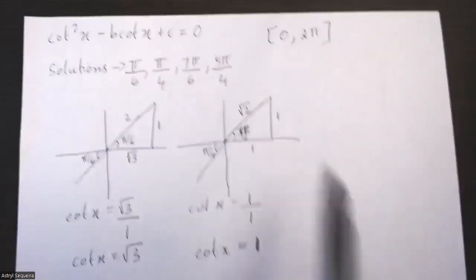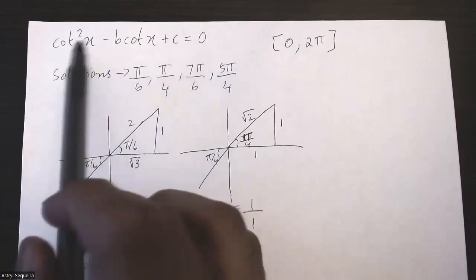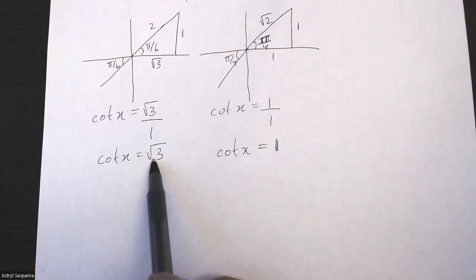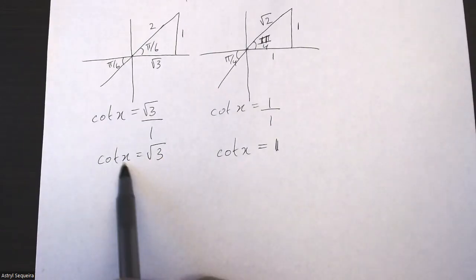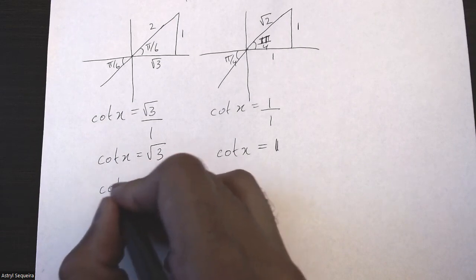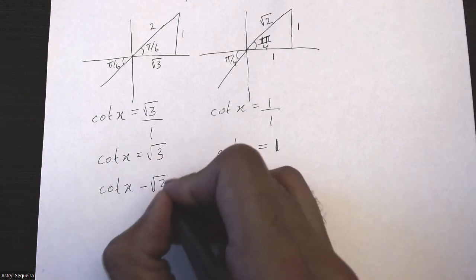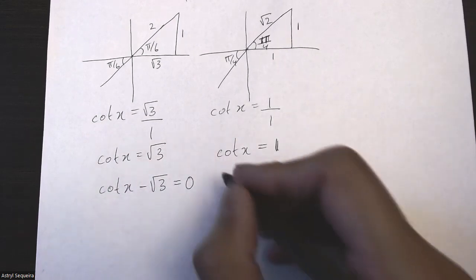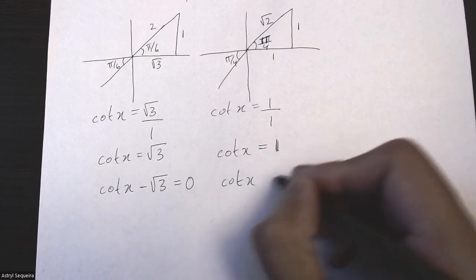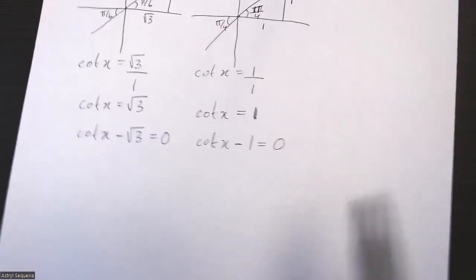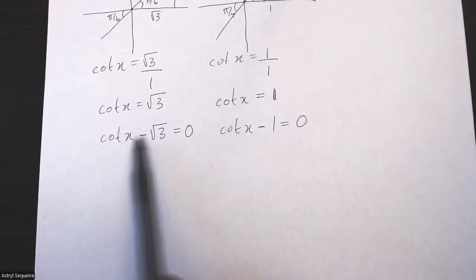Now we need to convert this into the equation. We're doing our steps backwards. So cot x minus √3 equals 0, and cot x minus 1 equals 0. These are each of my factors.